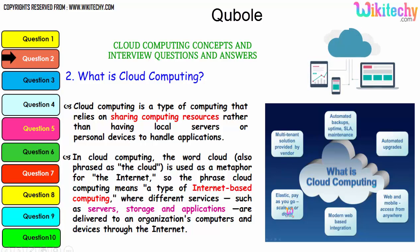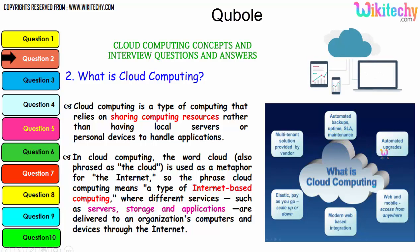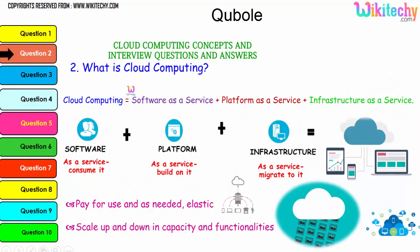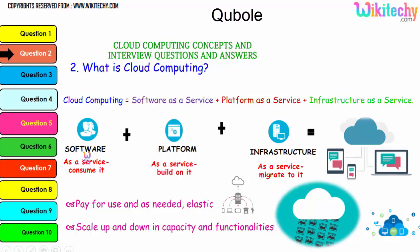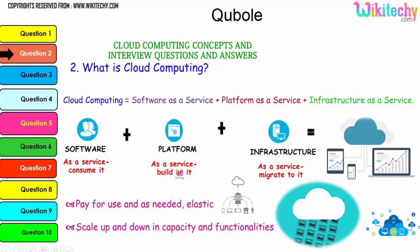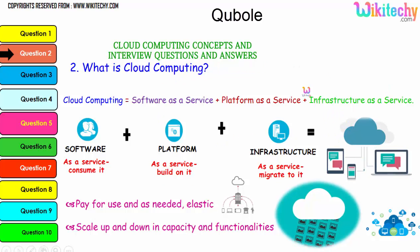Additional features of cloud computing include modern web-based integration, web and mobile access, automated upgrades, and automated backups. These are considered major advantages of cloud computing. Cloud computing is built on three core service models: Software as a Service, Platform as a Service, and Infrastructure as a Service. The collaboration of software, platform, and infrastructure is what is referred to as cloud computing.